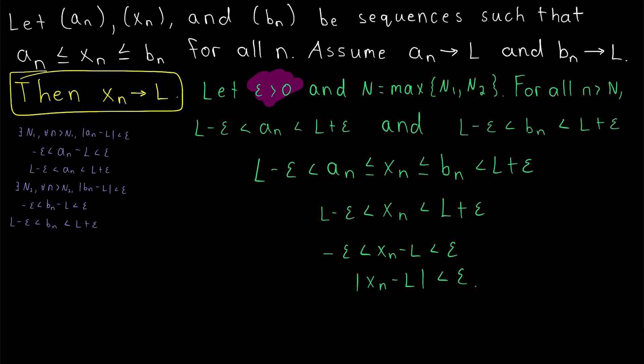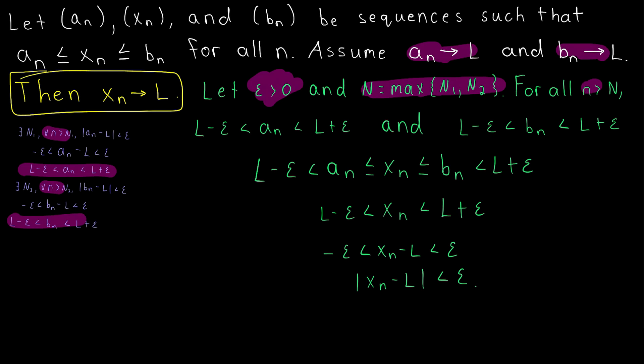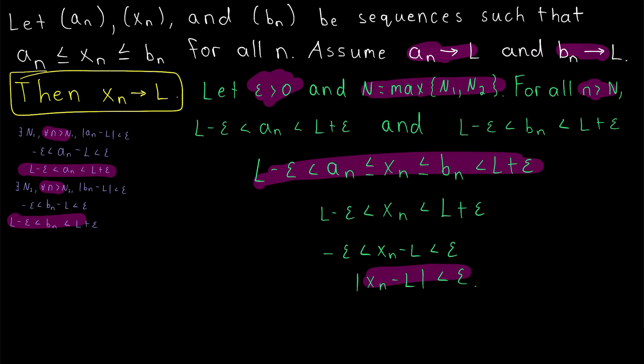We have that for any epsilon greater than zero, a_n and b_n are eventually within epsilon of the limit L. As long as we go far enough in the sequence to guarantee both of those inequalities, x_n squeezed between a_n and b_n is also within epsilon of the limit L.